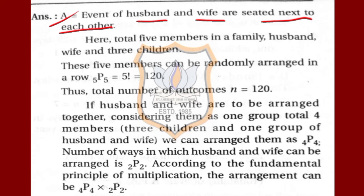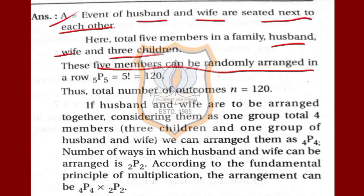In the family there are five members: one husband, one wife and three children. These five members can be arranged in a row in 5 factorial ways, which equals 120. So the total number of outcomes N = 120.